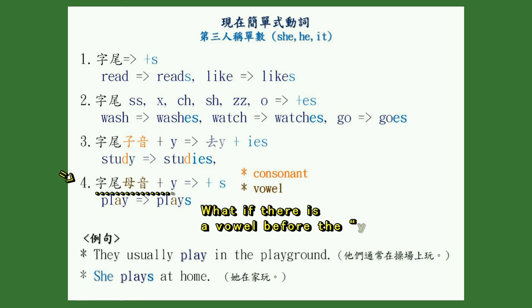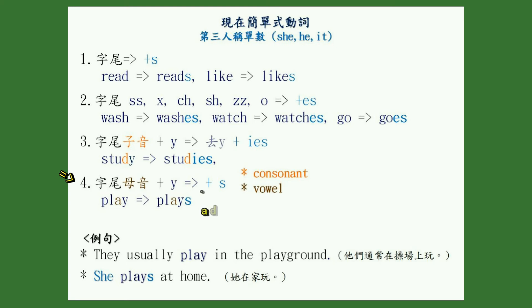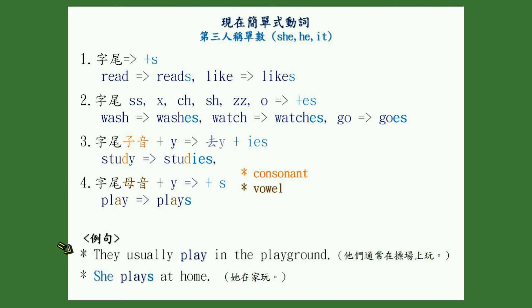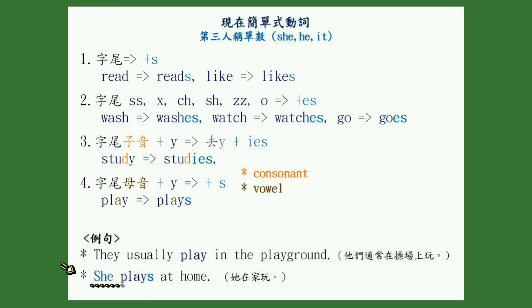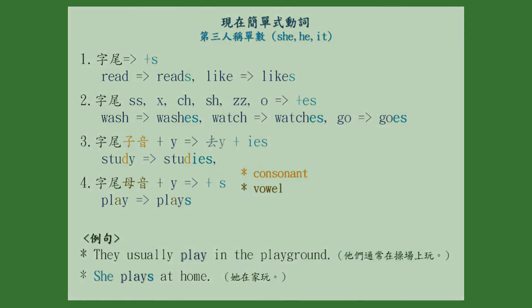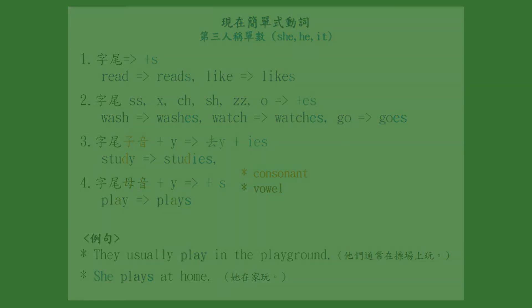What if there is a vowel before the Y? In that case, we just add an S. For example: play, plays. They usually play in the playground. She plays at home. There is a vowel before the Y — don't forget to do that.